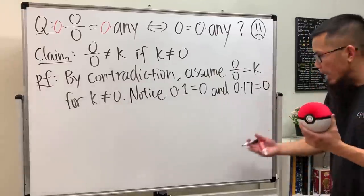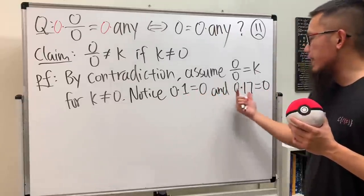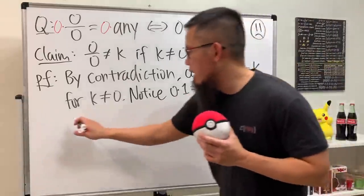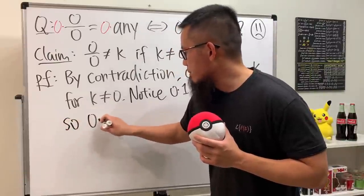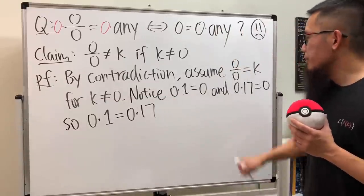As we can see, this and that they are both equal to zero, so of course this and that they have to be equal. So zero times one is equal to zero times 17.